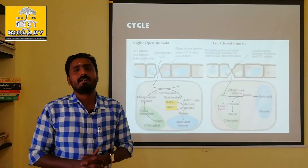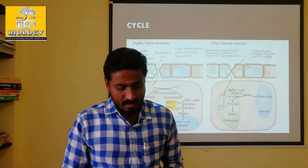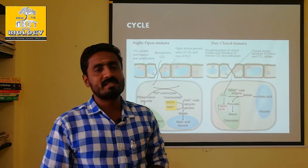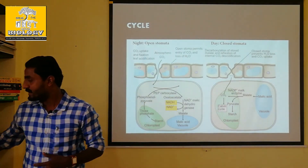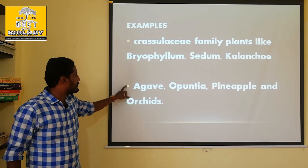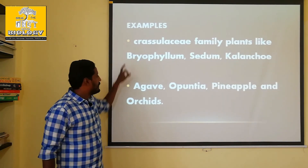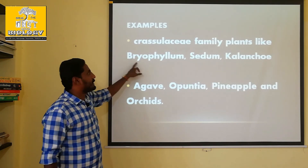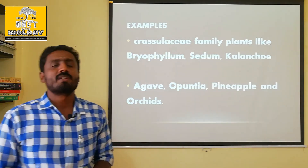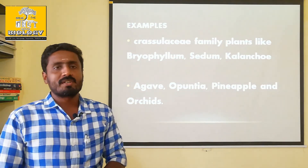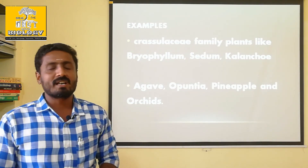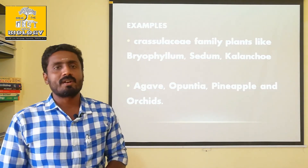In this process, C4 plants are associated with the CAM cycle. In the C3 cycle, a different adaptation is present. In the C4 family, these are the main characteristics. C4 family is related to the C3 family. Thank you for joining us.